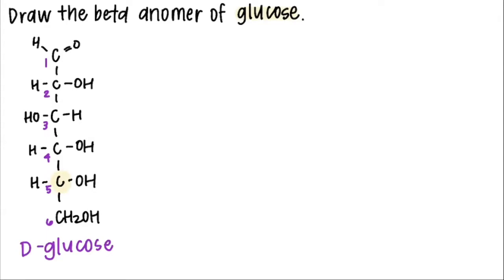The way to find out if a sugar is in the D or L form is to look at the penultimate carbon or the second to last carbon in the chain. In this case, carbon number five is the penultimate carbon.